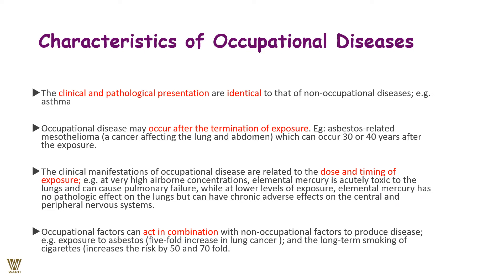The clinical manifestation of occupational disease is related to the dose and timing of exposure. For example, at very high airborne concentrations, elemental mercury is acutely toxic to the lungs and can cause pulmonary failure, whereas at lower levels of exposure, elemental mercury has no pathogenic effects but can have chronic adverse effects on the central nervous system. Occupational factors can also act in combination with non-occupational factors — for example, exposure to asbestos causes a five-fold increase in lung cancer risk, and long-term cigarette smoking increases that risk by 50 to 70 times.